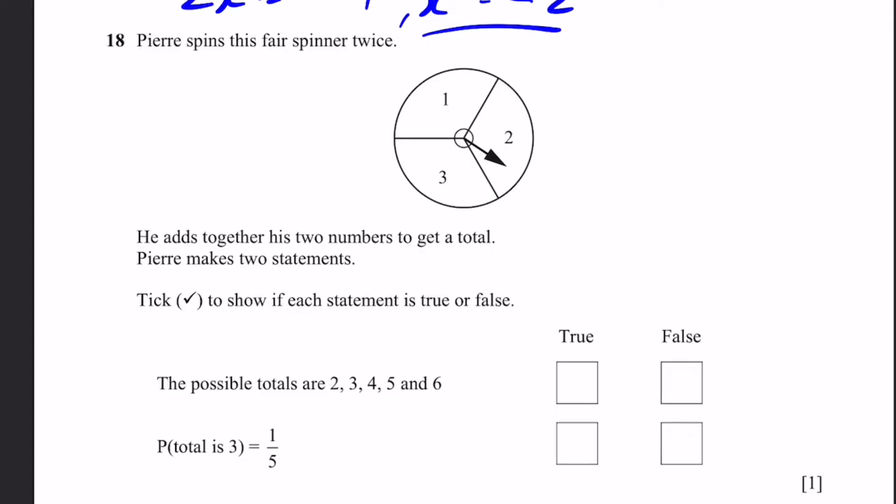Question 18. Pierre spins the fair spinner twice. He adds together his two numbers to get a total. Pierre makes two statements. Tick to show each statement is true or false. The possible totals are 2, 3, 4, 5, and 6. This is correct. Since 2 is possible, 1 plus 1. 3 is possible, 1 plus 2. 4 is possible, 1 plus 3 or 2 plus 2. 5 is possible, 3 plus 2. And 6 is possible, 3 plus 3. 1 is not possible, by the way. Because the least value you can get is 1 plus another 1 on the second spin. So the least value is 2. You can't get 1.